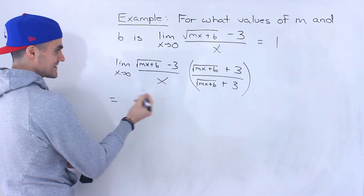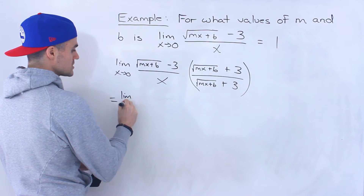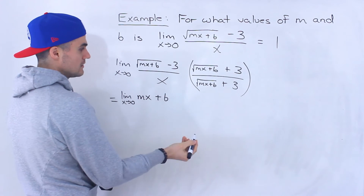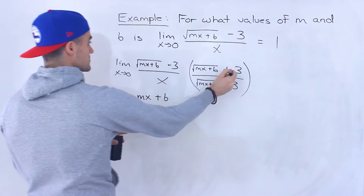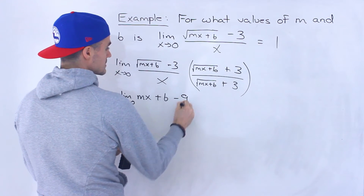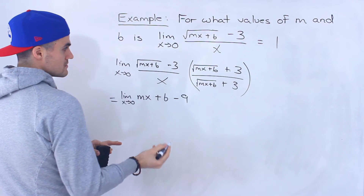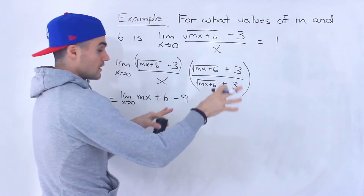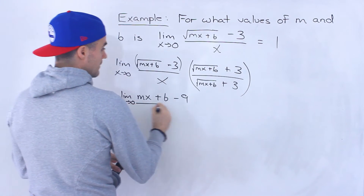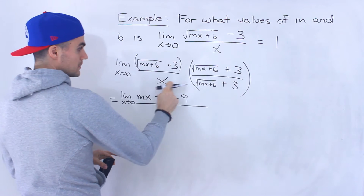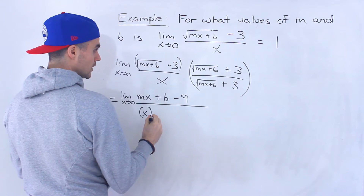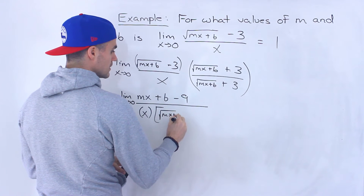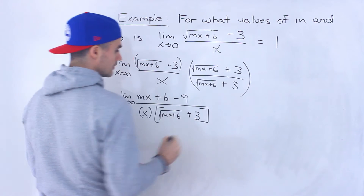The next line is going to have the limit as x approaches 0. This times this gives us mx plus b — the square root goes away — and then negative 3 times positive 3 gives us minus 9. There are no middle terms since this is a difference of squares, so we just multiply the end terms. On the bottom, I'm keeping these two terms separate: an x, and then the square root of mx plus b plus 3.